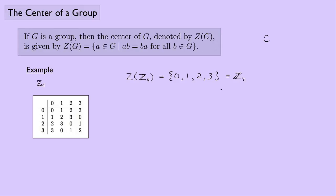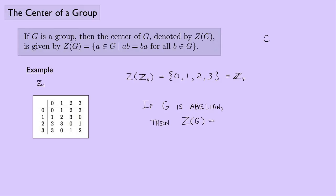That's not so unusual if you think about it — this group is abelian, meaning every element commutes with every other element. So if we have an abelian group G, then we can say for sure that the center of G is going to be just the group itself. So that's not very exciting. Let's see if we can get a more exciting case — maybe if we try something that's non-abelian.